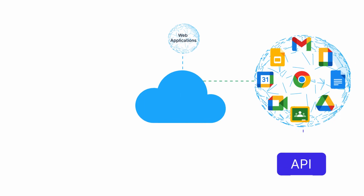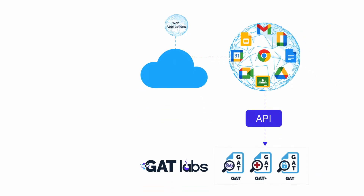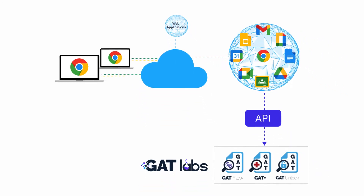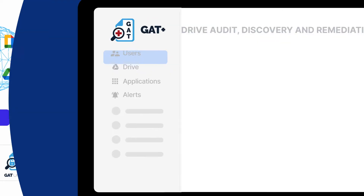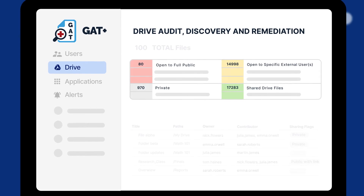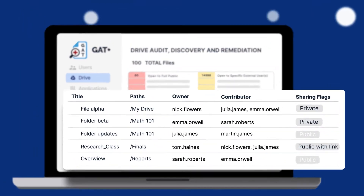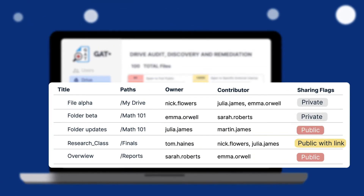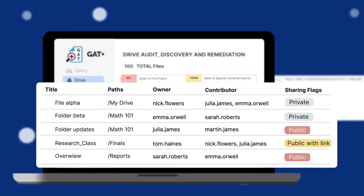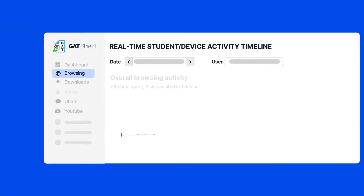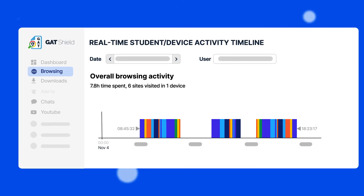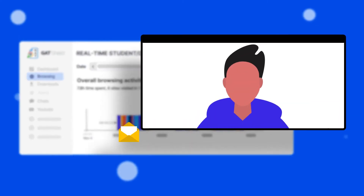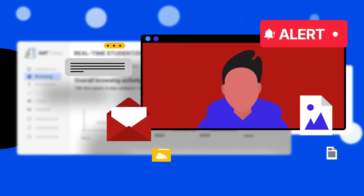This is done via APIs in Workspace and Classroom and in Chrome via a Chrome extension. Our customers get access to essential insights from students' email and drive content to real-time browsing, so they can take immediate action if a risk arises.